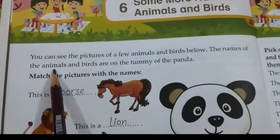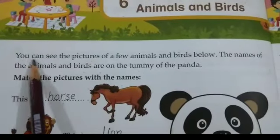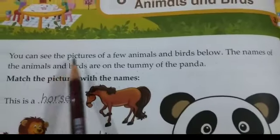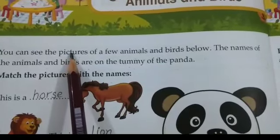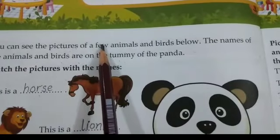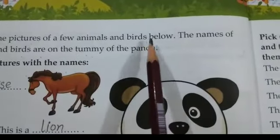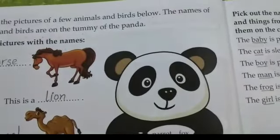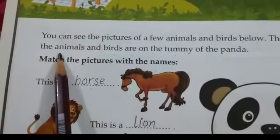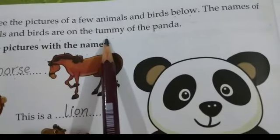First, read the question with the syllables. Y-O-U, you. C-A-N, can. You can. S-E-E, see. You can see the pictures. P-I-C-T-U-R-E-S, pictures. O-F, of. A F-E-W, few. B-E-L-O-W, below, means neeche. The names of the animals and birds are on the tummy.